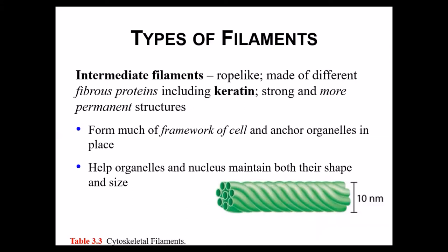The next type of filament is called the intermediate filament. It is intermediate in size between all three. It's more rope-like, with multiple strands of a protein called keratin wrapped together, giving it very strong structural support. It helps to make up the framework of the cells — your cells are not just empty bags of cytoplasm and organelles. You actually have this type of framework or scaffolding inside of a cell to hold things in place, connecting some of the organelles to keep them in position.